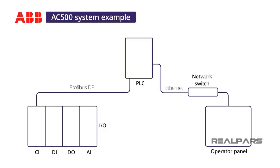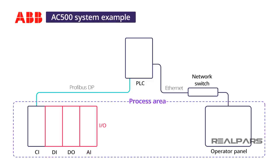I will define a small system that will include a CPU and interfaces for Profibus DP and Ethernet. The CPU will be located in a cabinet in the main automation equipment room. I will require 24V DC I/O with one digital input card, one digital output card, and one analog input card, located remotely from the CPU in an I/O panel located in the process area.